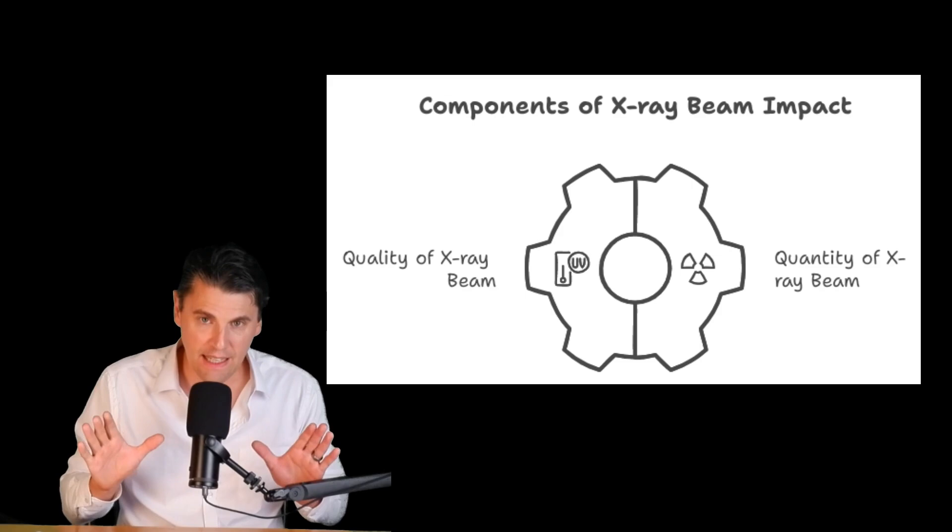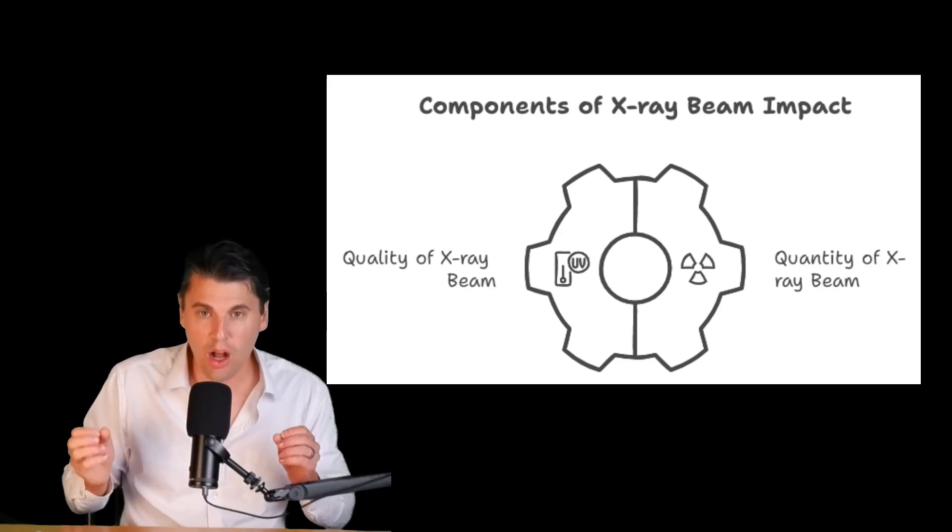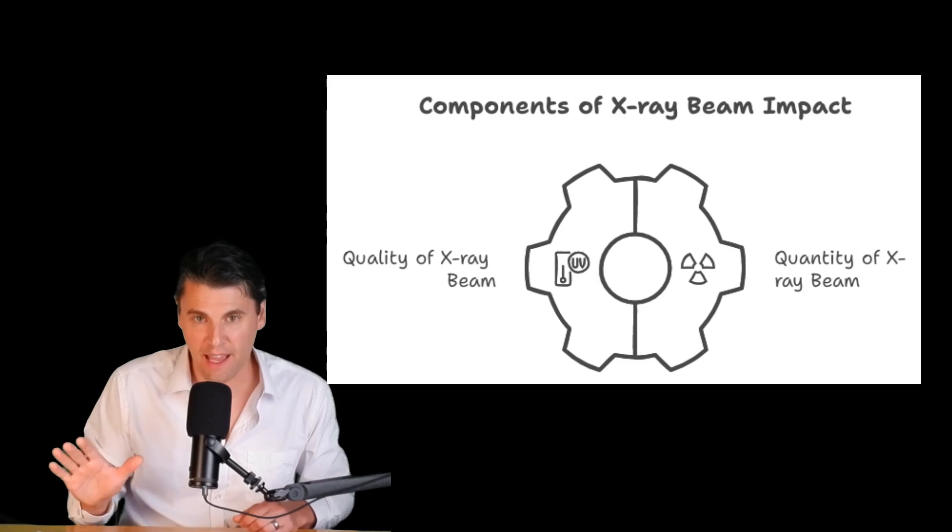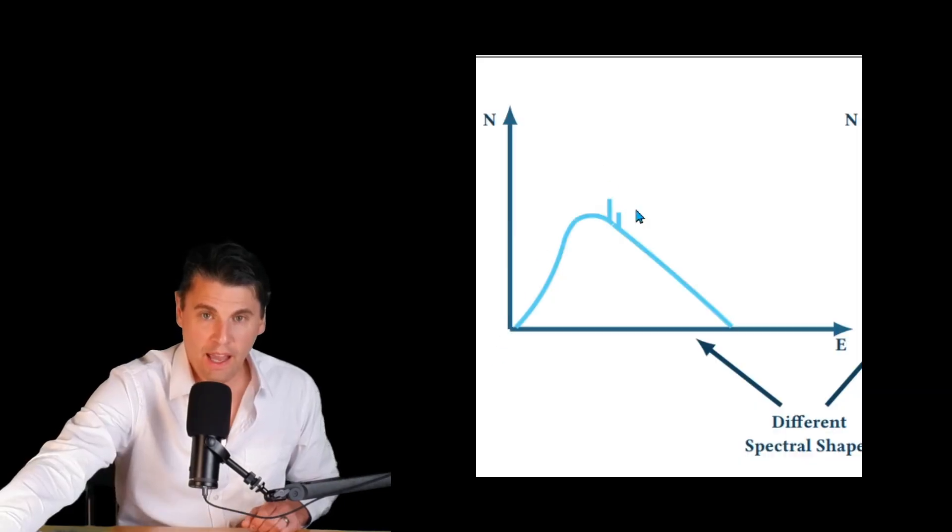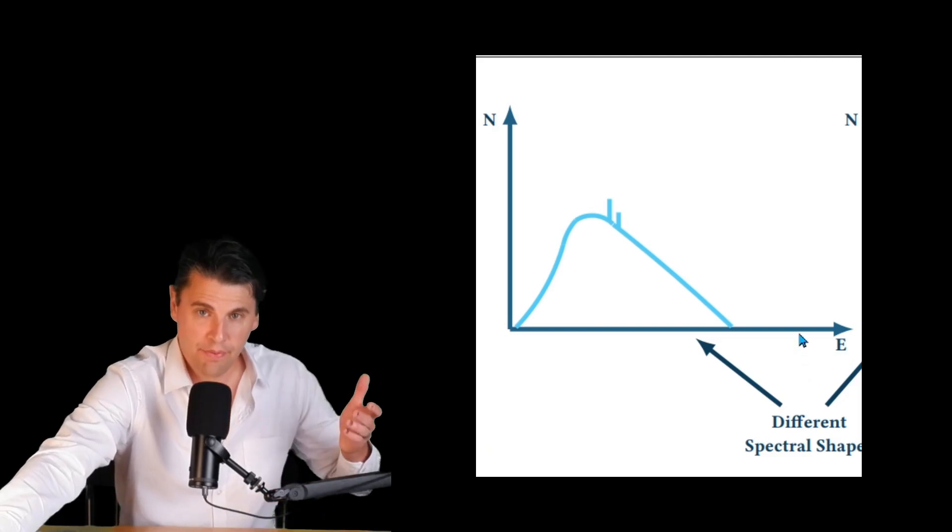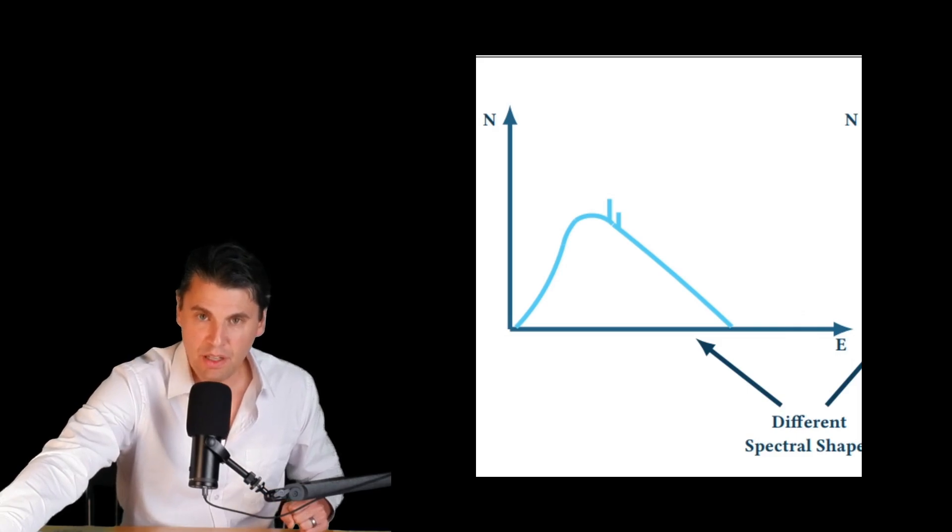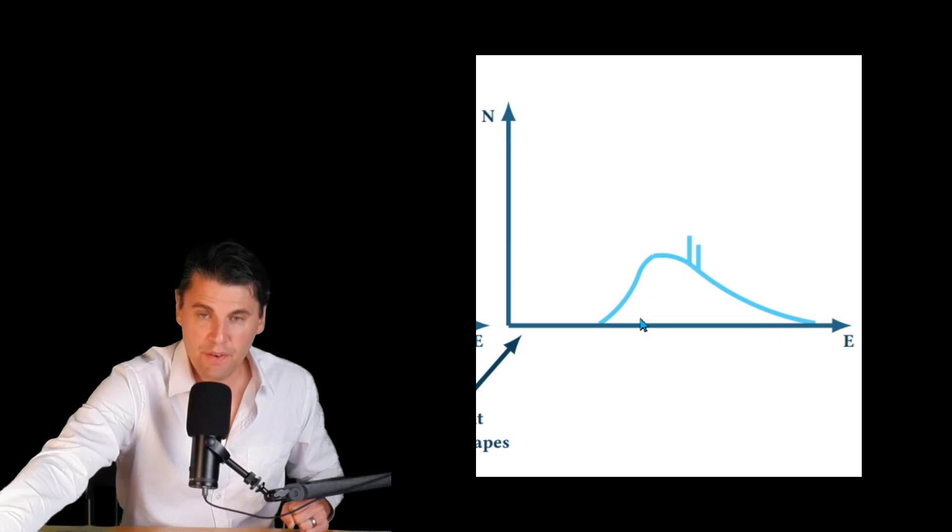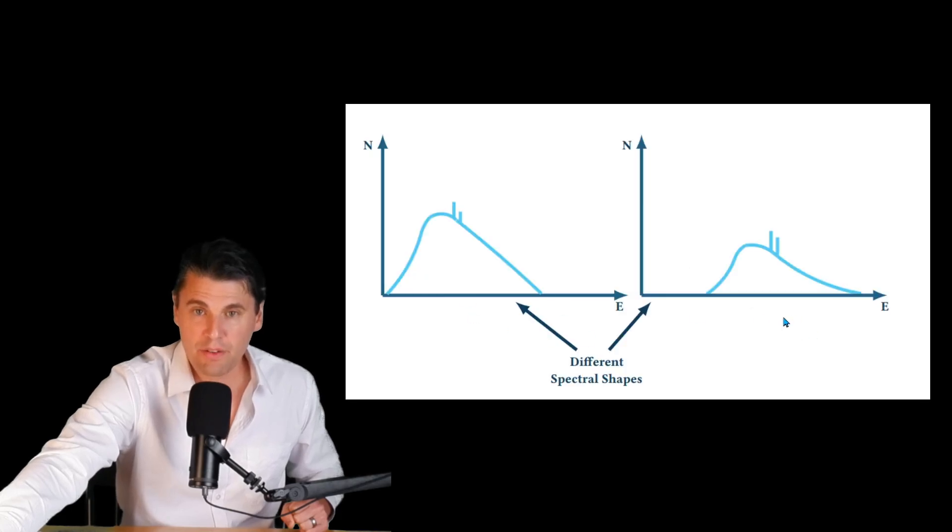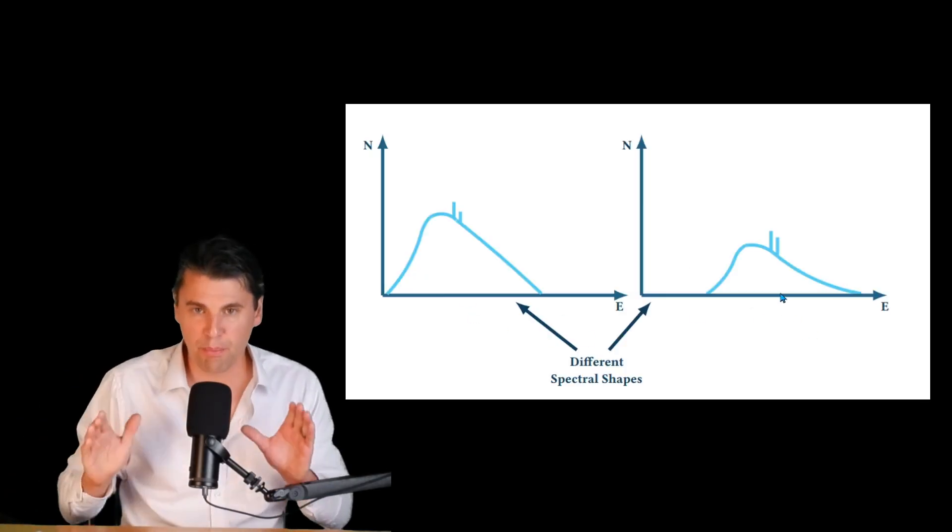The beam quality is actually a descriptor of the energy of the x-ray beam. If you took an x-ray beam like this, and then you added a filter or change the kV, or did something that changed the energy distribution, that you got a different spectra that looked like this. You can see this spectra over here has a higher average energy. This spectra over here has a lower average energy. These two spectra have different beam quality.